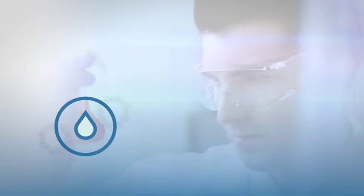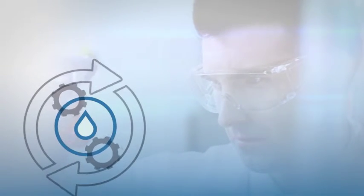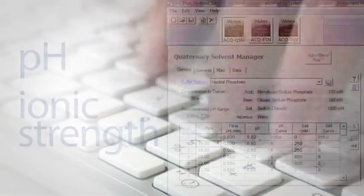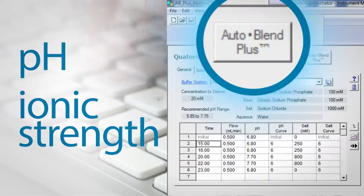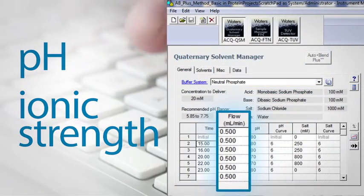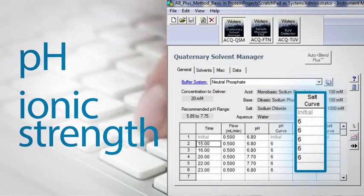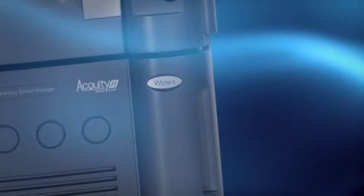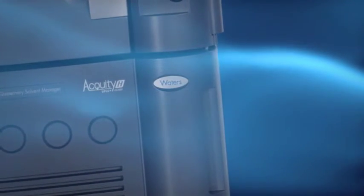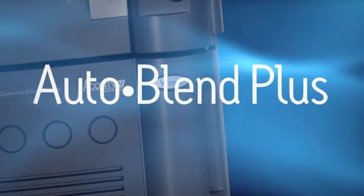Chromatographers, there's a powerful force for your lab. One that gives you unlimited access to separation space without cumbersome manual manipulations. One that lets you program your LC to create mobile phase compositions at a specific pH and ionic strength. One that makes it easier than ever to get the best analytical method for your sample. This force is Auto Blend Plus.